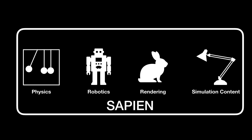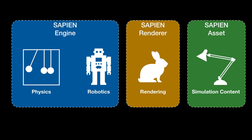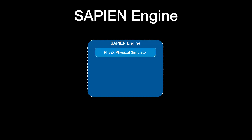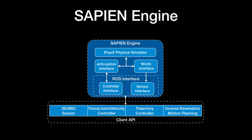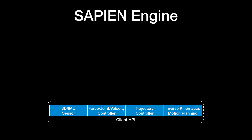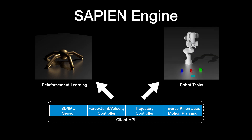In our work Sapien, we address these four aspects by introducing our engine, renderer, and assets. Let's start by looking at the Sapien Engine, which handles physics and robotics integration. Sapien Engine is built on top of the PhysX physical simulator. We expose the articulation interface for robotics and the world interface for accessing everything in the simulator world. We integrate the Robot Operating System, or ROS, into Sapien Engine to support sensors, controllers, and high-level motion planning algorithms for client-side use. With these features, Sapien Engine is able to support standard reinforcement learning settings and robotics tasks.